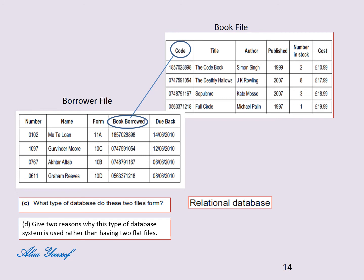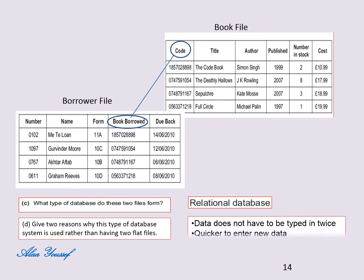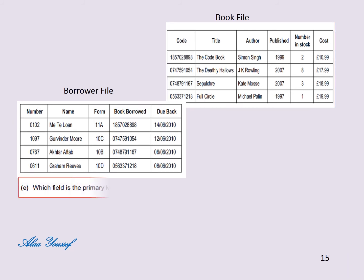D) Give two reasons why this type of database is used rather than two flat files. The answers are: data doesn't have to be typed in twice, it is quicker to enter new data, and less storage capacity is used. E) Which field is the primary key in the book file? The answer is the code field.